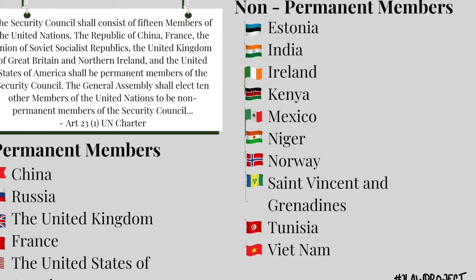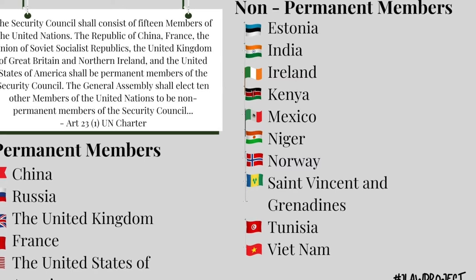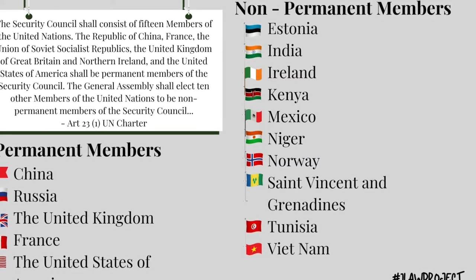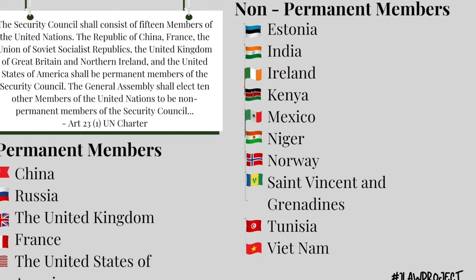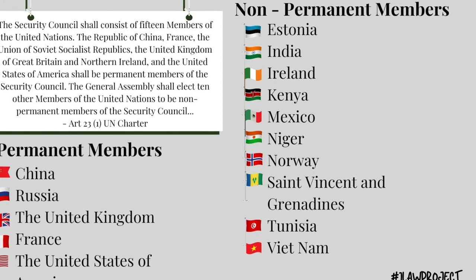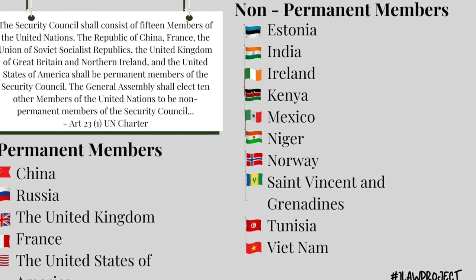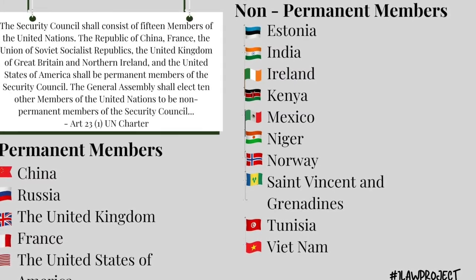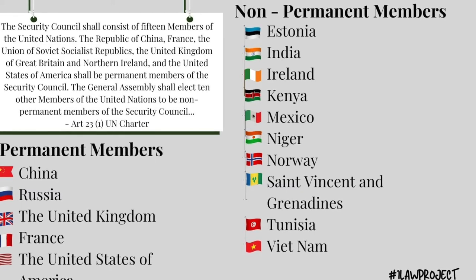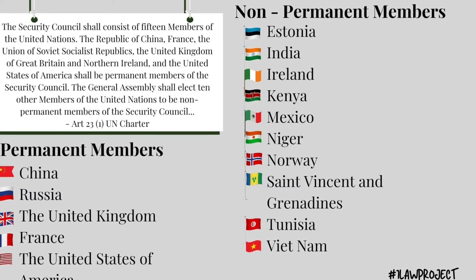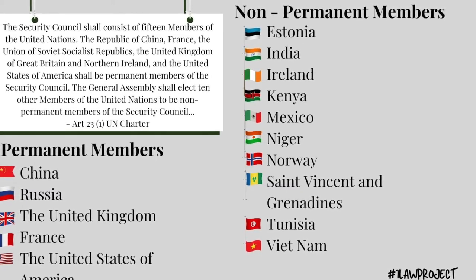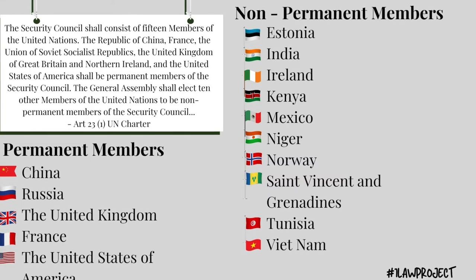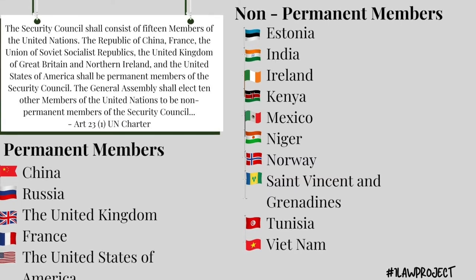Currently, the non-permanent members of the Security Council are Estonia, India, Ireland, Kenya, Mexico, Niger, Norway, Saint Vincent and the Grenadines, Tunisia, and Vietnam.